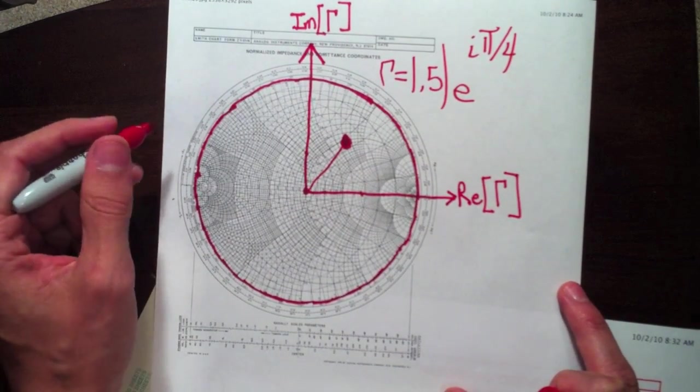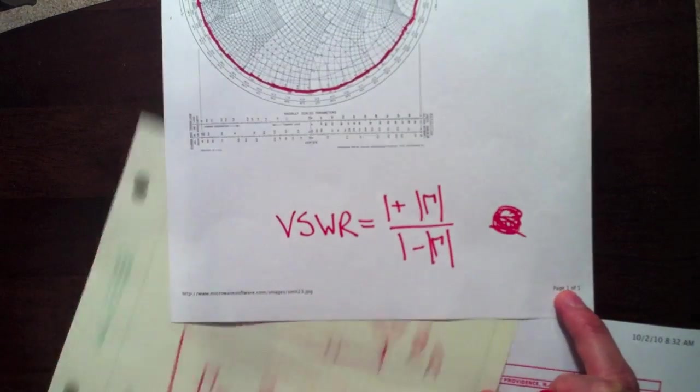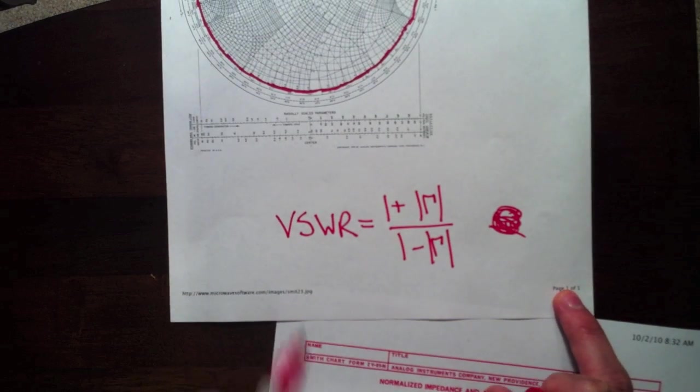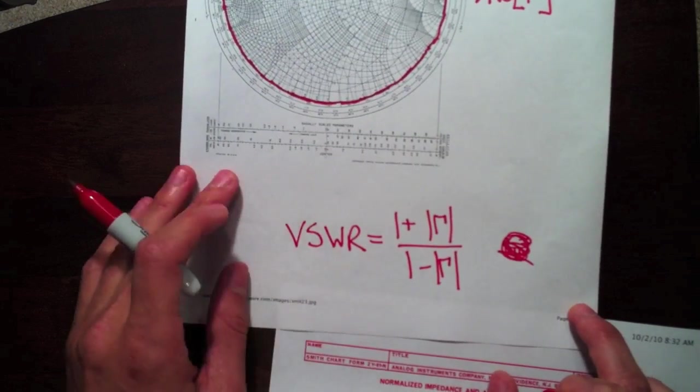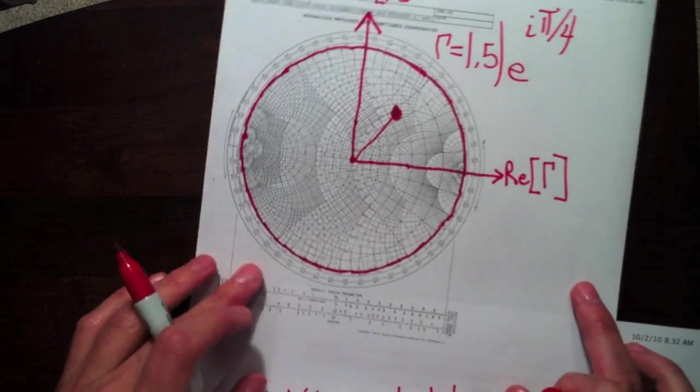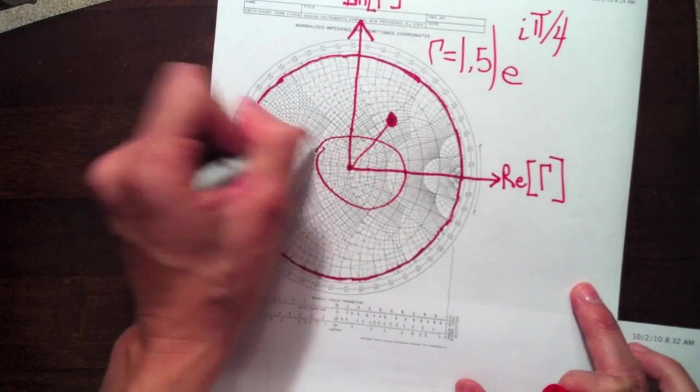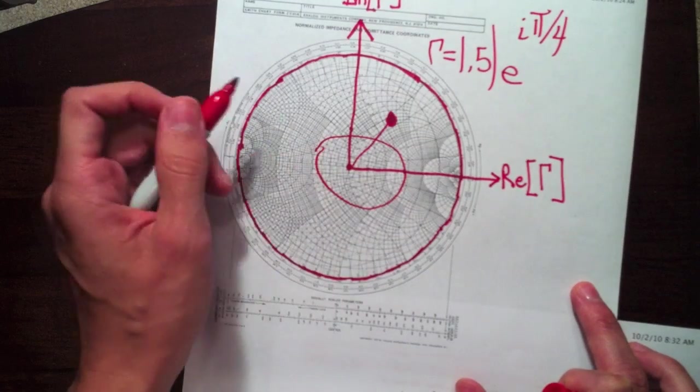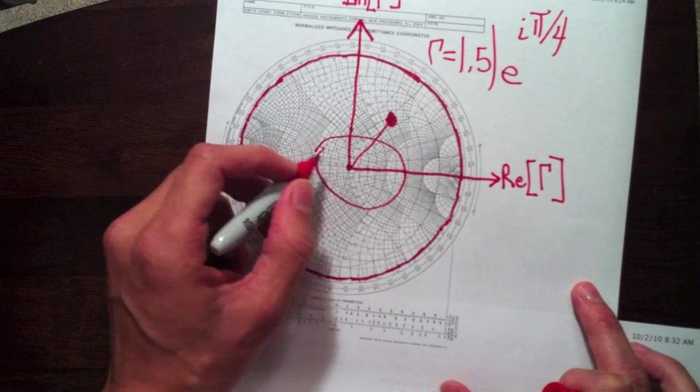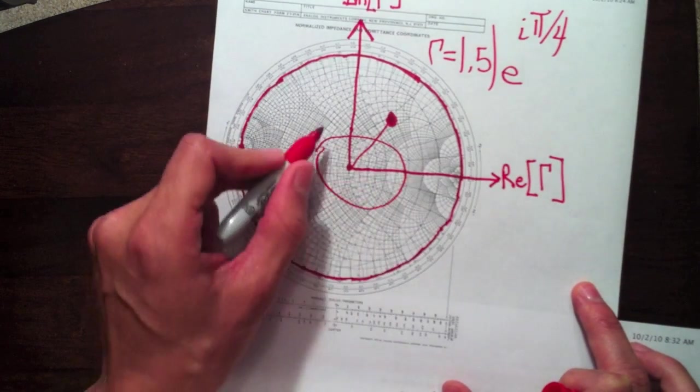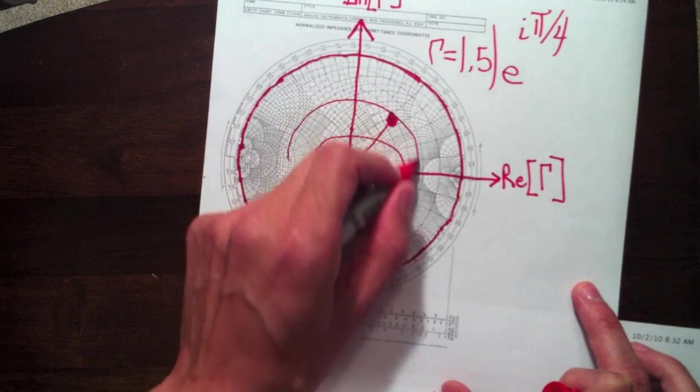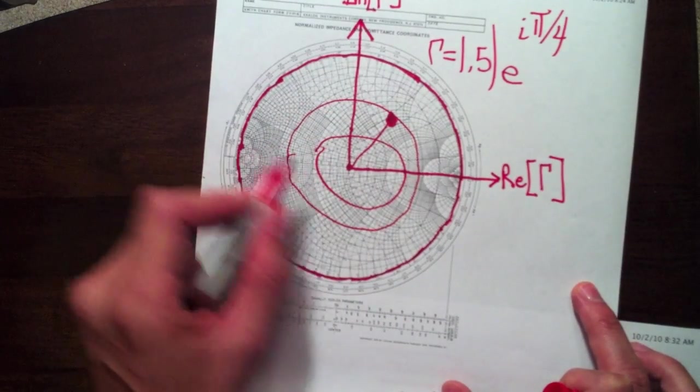And so, since VSWR is just a function of the magnitude of gamma, or also S11 if you want to look at it that way, constant circles, imagine this is a circle centered here, these would all be constant VSWR circles. So any point here would have a constant VSWR.